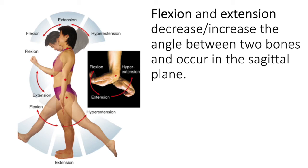The term hyperextension simply means to extend beyond standard anatomical position. Hyperextending the knee could occur when you kick a soccer ball and the ball isn't there, and your knee straightens very quickly — that can hurt. In the picture, the head is hyperextending when brought beyond standard anatomical position closer towards the back of the body. Flexion and extension movements occur in the sagittal plane and change the angle between two bones.